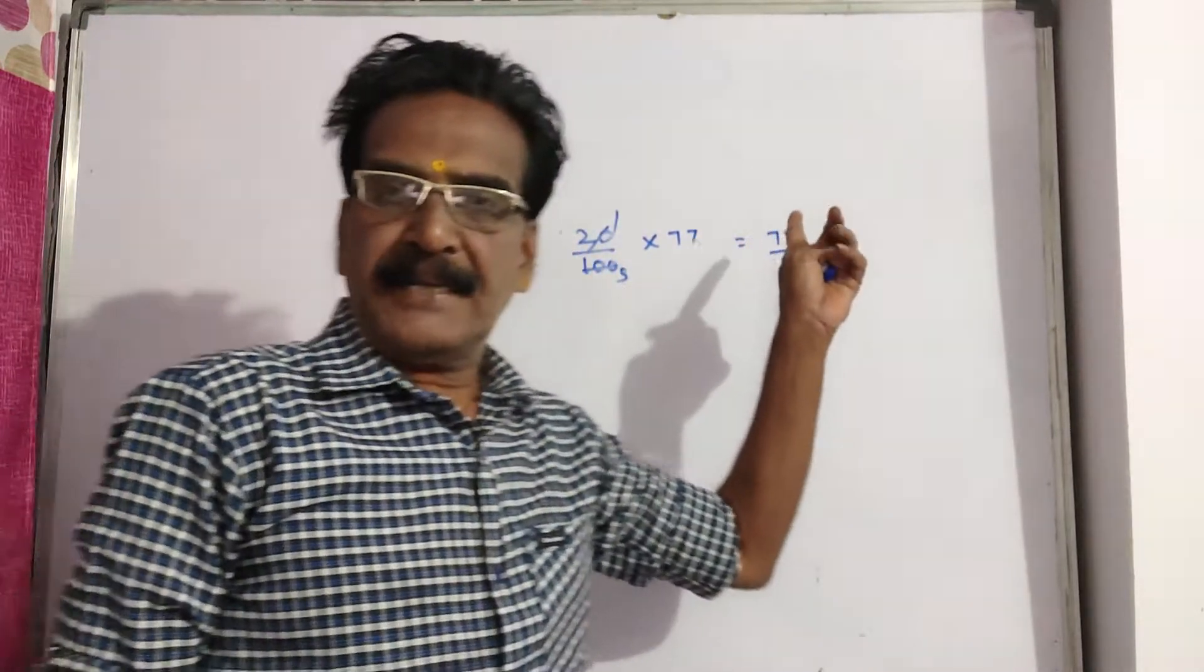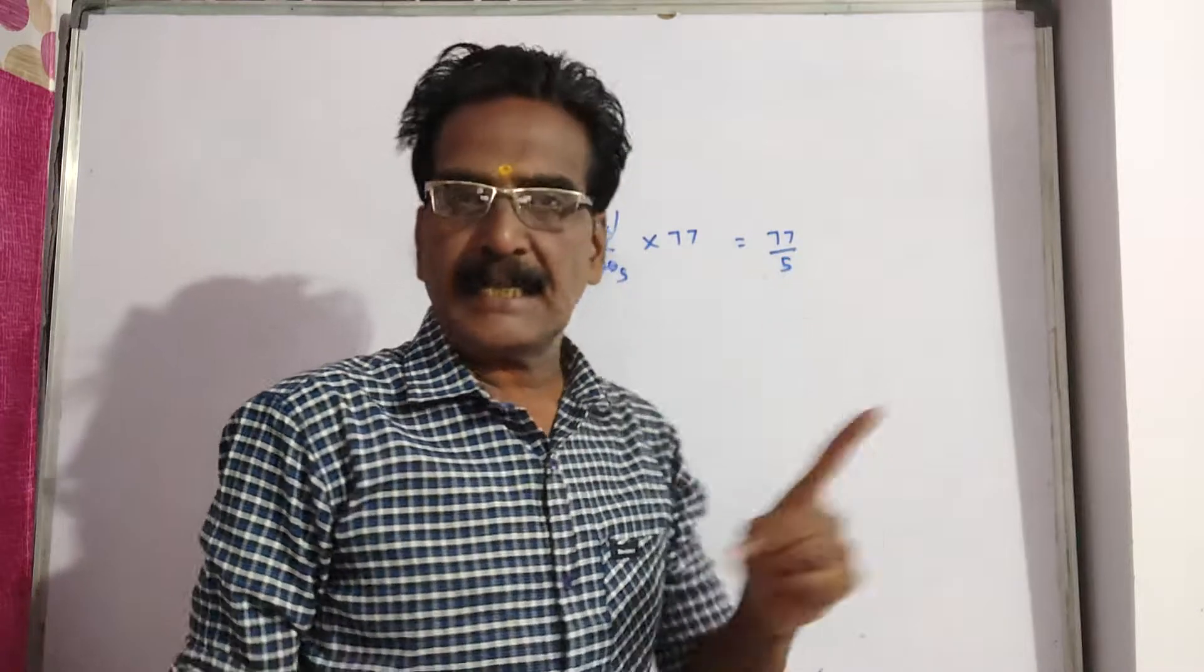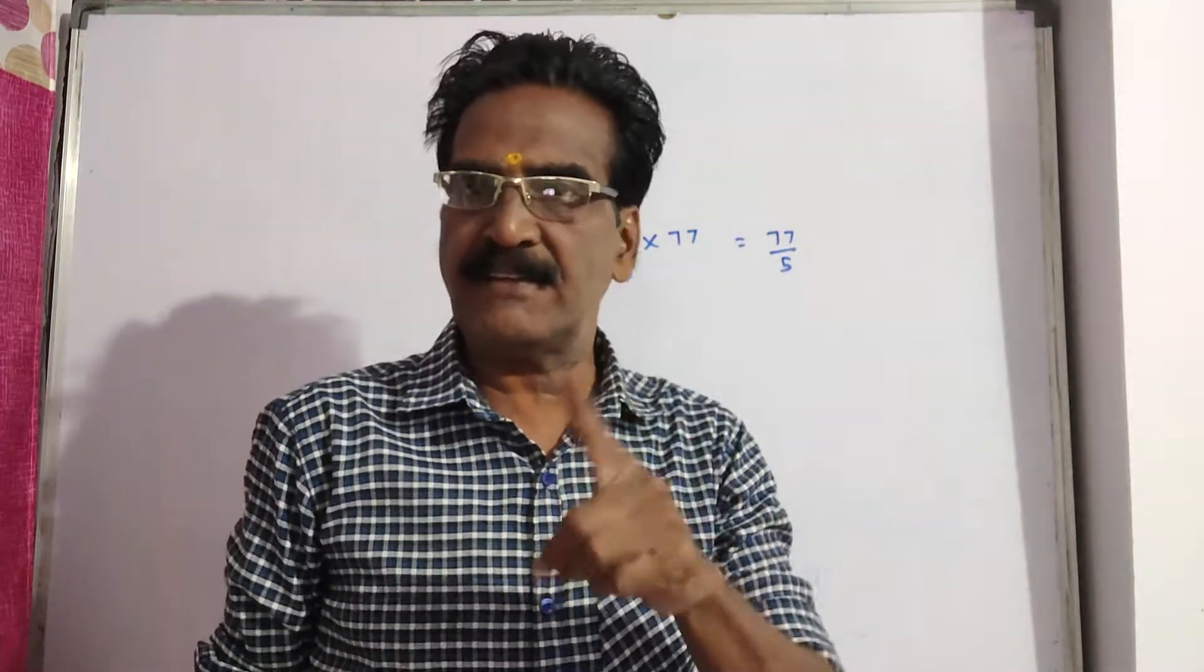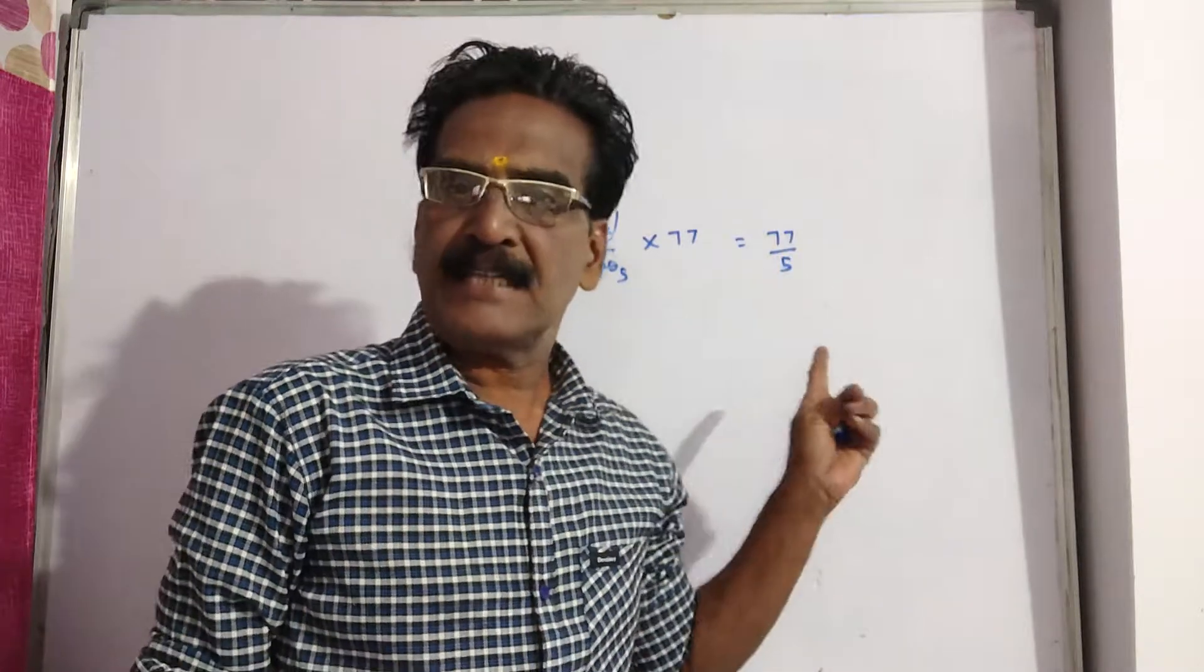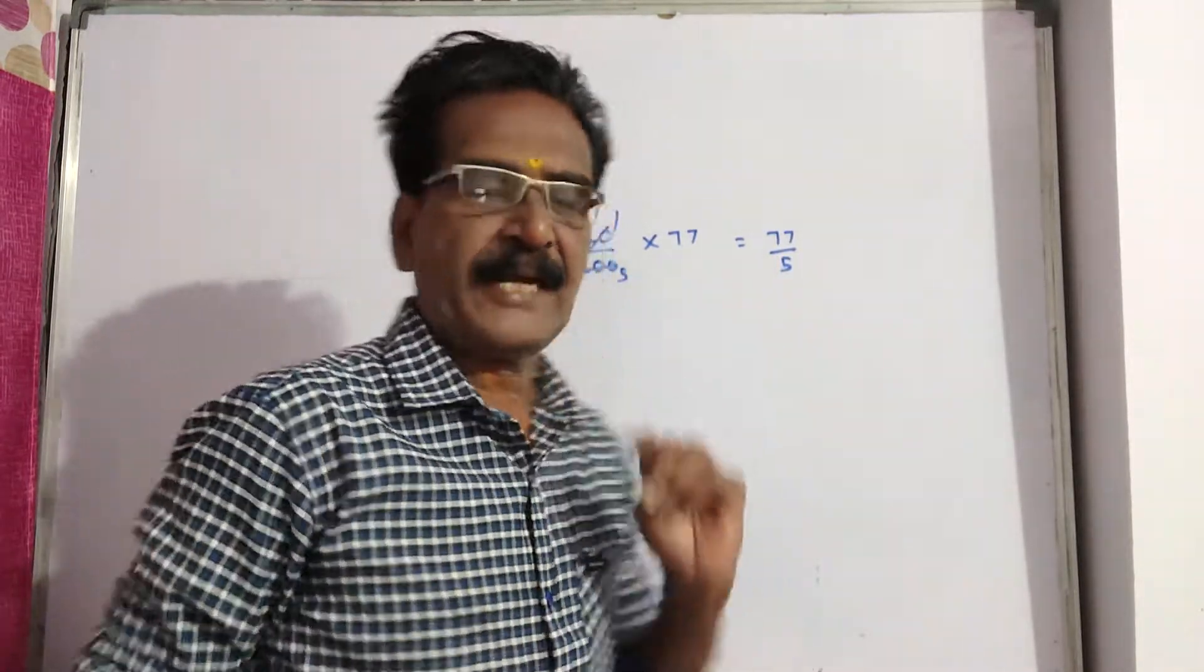Friends, because of this reduction, a person is getting 3.5 kg rice extra. That means this 77 by 5 is the price of 3.5 kg.